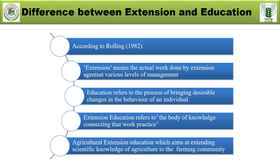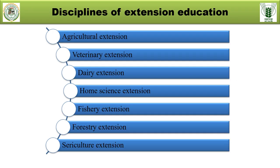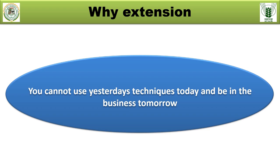By changing the prefix, various disciplines and specializations have been developed as part of extension education. These include agricultural extension, veterinary extension — dealing with animal science and animal husbandry — dairy extension, home science extension, fishery extension, forest extension, sericulture extension, and so on. The concept of extension remains common across all these disciplines; what changes is the subject matter, as specialists extend technology and information to the benefit of the common man in each field.